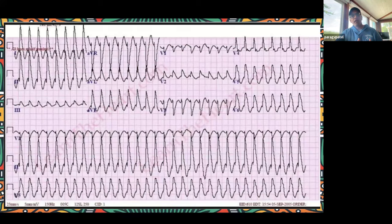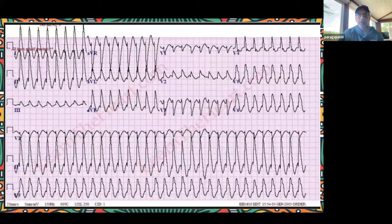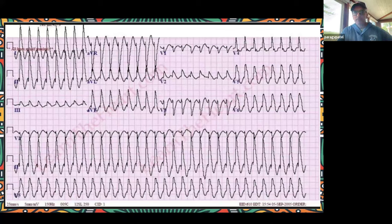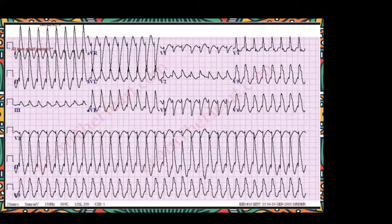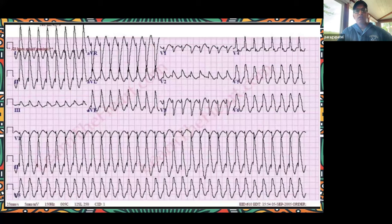Using the same template: is this fast or slow, is it narrow or wide, is it regular or irregular? This patient is presenting with chest pain, shortness of breath, and is hypoxic with a saturation of 80%, making this a clinically unstable rhythm. We're getting responses: very fast, wide, VT. Excellent. A lot of people are saying cardioversion. Good recognition. Fast rhythm, wide, regular, clinically unstable.